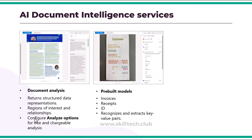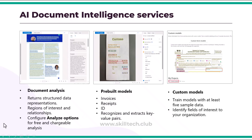These are pre-built models, and if you don't have a perfectly matched model you can go with custom models, where you provide and train your model with multiple forms of data. You need to provide at least five sample forms, and based on those five samples you can create a custom model that can be used to further gather information from the document intelligence service.